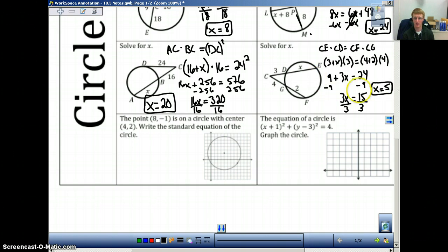So, for this one, you should have gotten X equals 5. Let's go through this. We have CE times CD equals CF times CG. So plug in what we know. 3 plus X is CE. 3 is CD. That's these two parts. 4 plus 2 is CF. 4 is CG. Plug in what we know and now solve. 3 times 3 is 9. 3 times X is 3X. 4 plus 2 is 6. 6 times 4 is 24. Minus 9 on both sides. 3X equals 15. Divide by 3 on both sides. Get X equals 5.